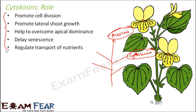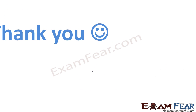We have now covered all the growth-promoting hormones: auxin, gibberellins, and cytokinins. Auxin is primarily required for vertical growth of the plant. Cytokinin is primarily required for lateral growth of the plant. Gibberellin is primarily used for stem elongation and delay in aging. Thank you.